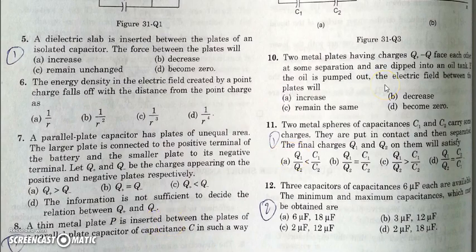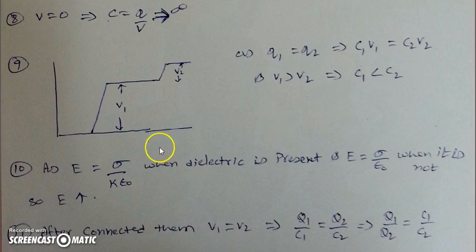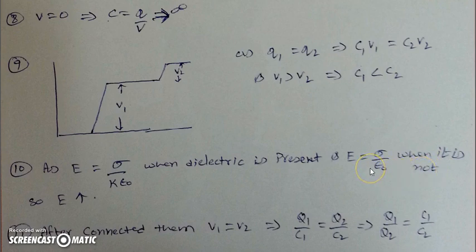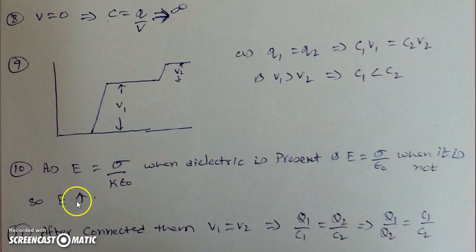The next question asks how the electric field varies when oil between the plates is pumped out. When the oil is removed, the dielectric constant K is no longer present. The field between the plates is σ/(Kε₀) with a dielectric and σ/ε₀ without it. Removing the dielectric reduces the denominator, so the electric field increases. The charge (and hence σ) remains conserved, and remember K is always greater than 1.